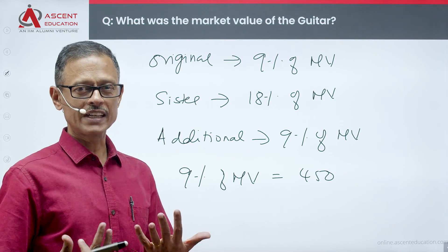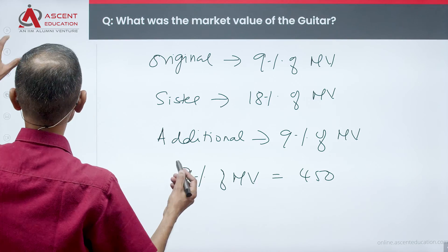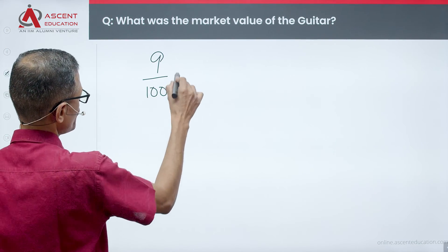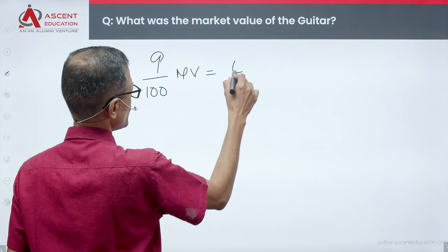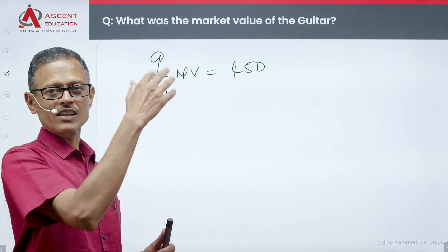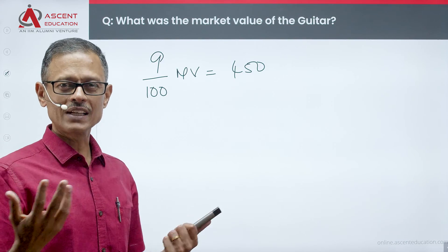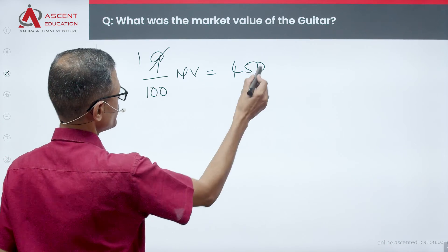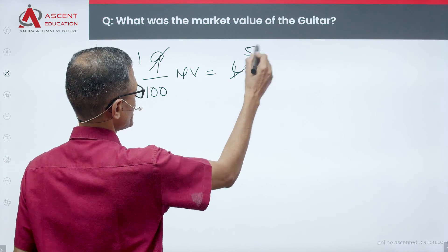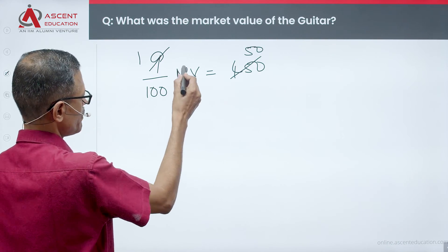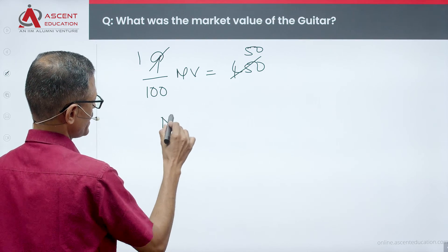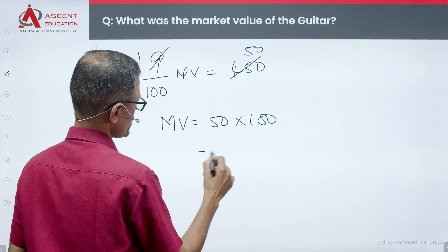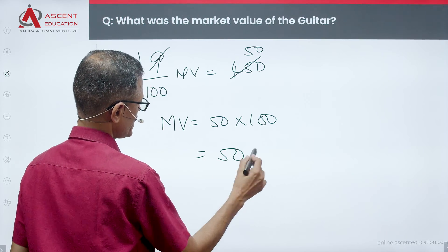What do we need to find? The market value. We can solve this: 9% written as 9/100 of the market value is equal to 450. Dividing both sides by 9, we get market value divided by 100 equals 50. Therefore, market value equals 50 × 100, which equals 5,000 rupees.